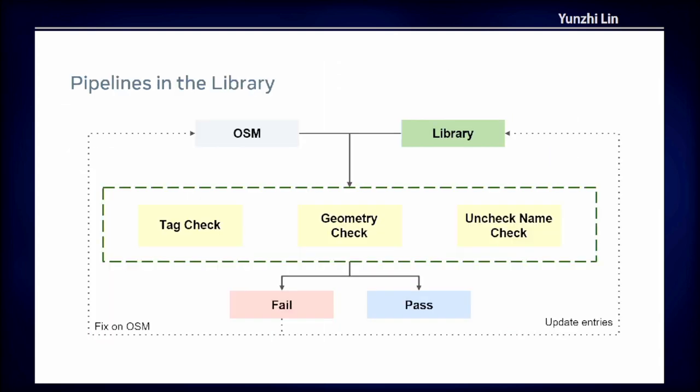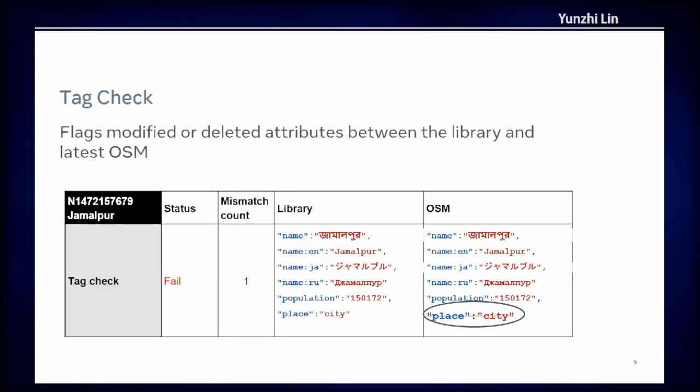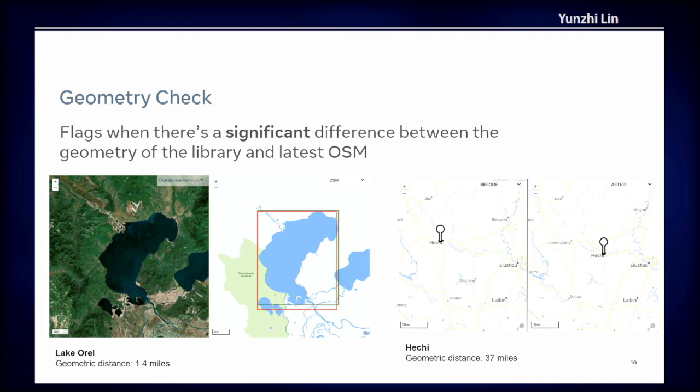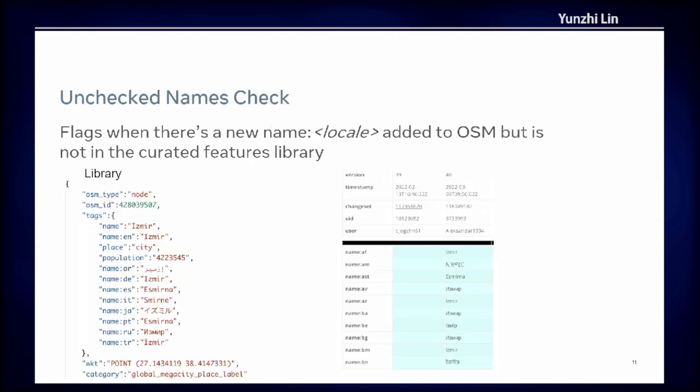About the pipeline, it includes three kinds of validation tracks: the tag track, the geometry track, and the untracked name track. Each track outputs a fail or pass signal. The tag track flags modified or deleted attributes between the library and the latest OSM data. The geometry track flags elements when there is a significant difference between the geometry on live OSM and the library. The untracked name track flags elements when new names are added to OSM but do not yet exist in the library.